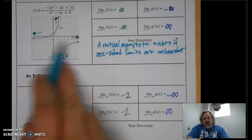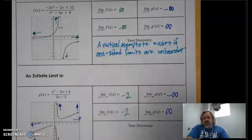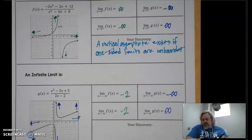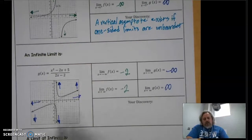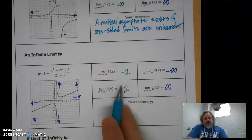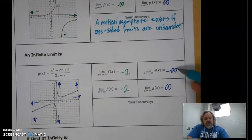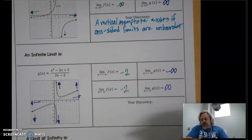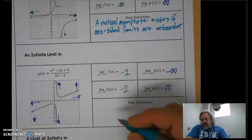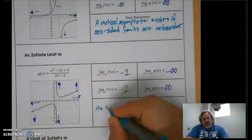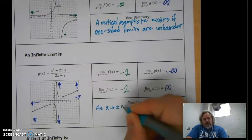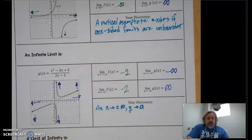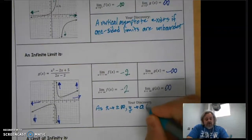When you approach from the left side or the right side and the function goes toward infinity, there must be a vertical asymptote at the point you're approaching. For the second behavior, we can see that as X approaches infinity, the function either approaches a specific Y value — which represents a horizontal asymptote — or it could approach positive or negative infinity due to a slant asymptote.